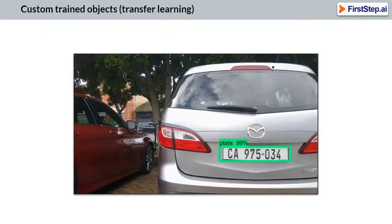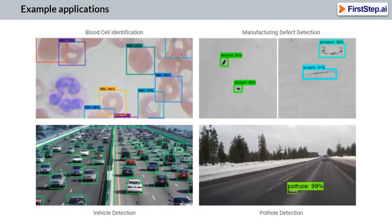Machine learning tools developed by Facebook and Google allow us now to train machine learning models to detect custom objects of our choosing — for example, license plates. Object detection can be applied to all kinds of objects, such as blood cell identification, manufacturing defect detection, vehicle detection, and even pothole detection.